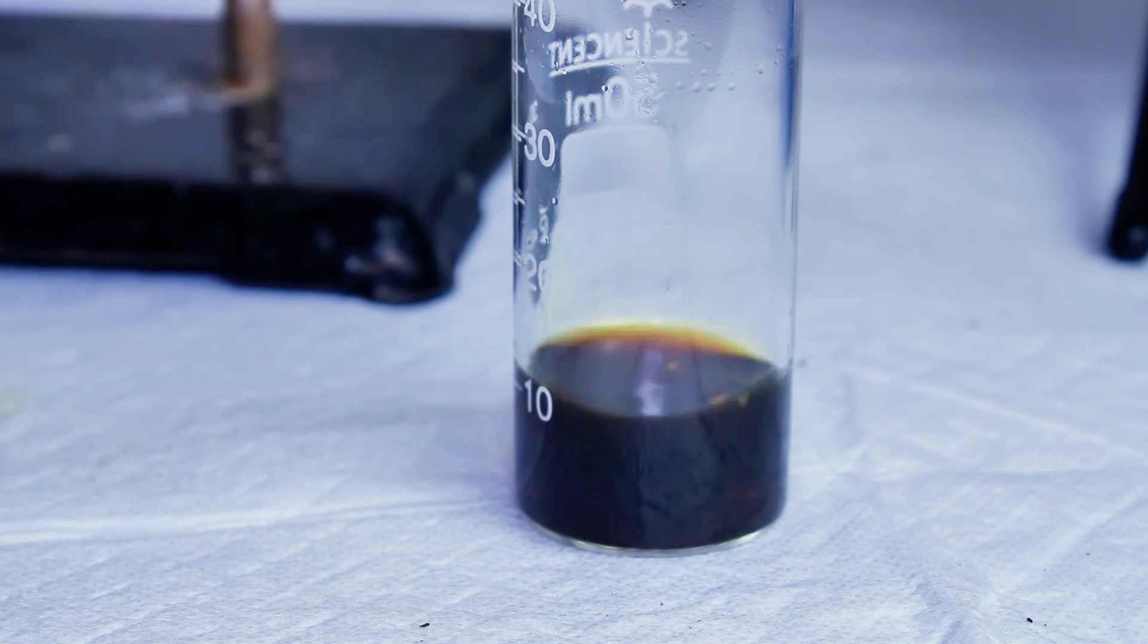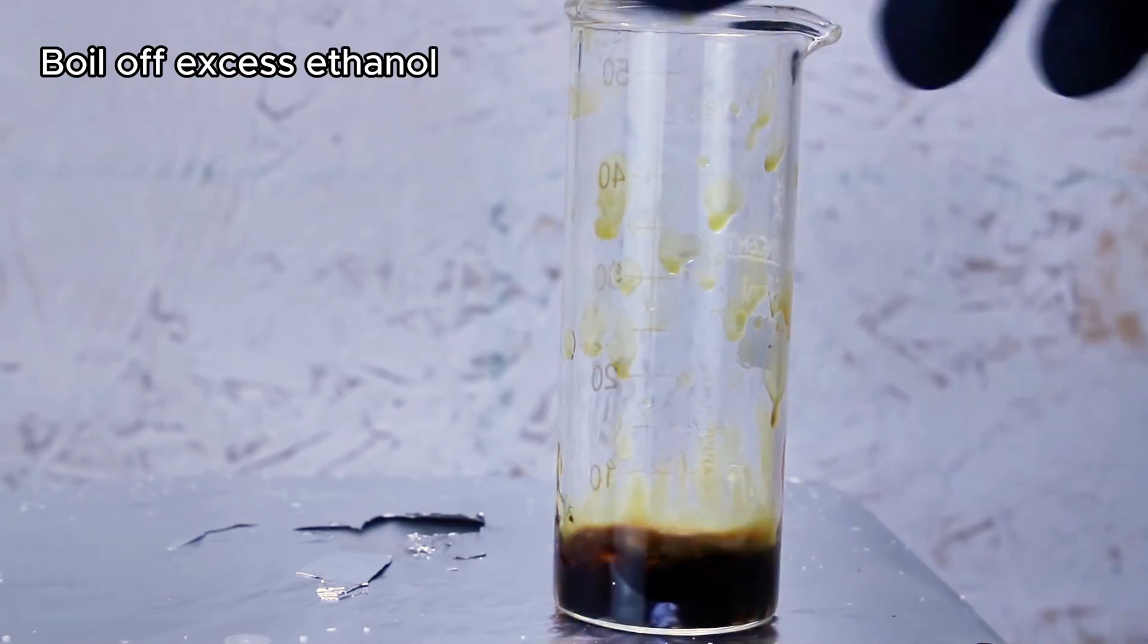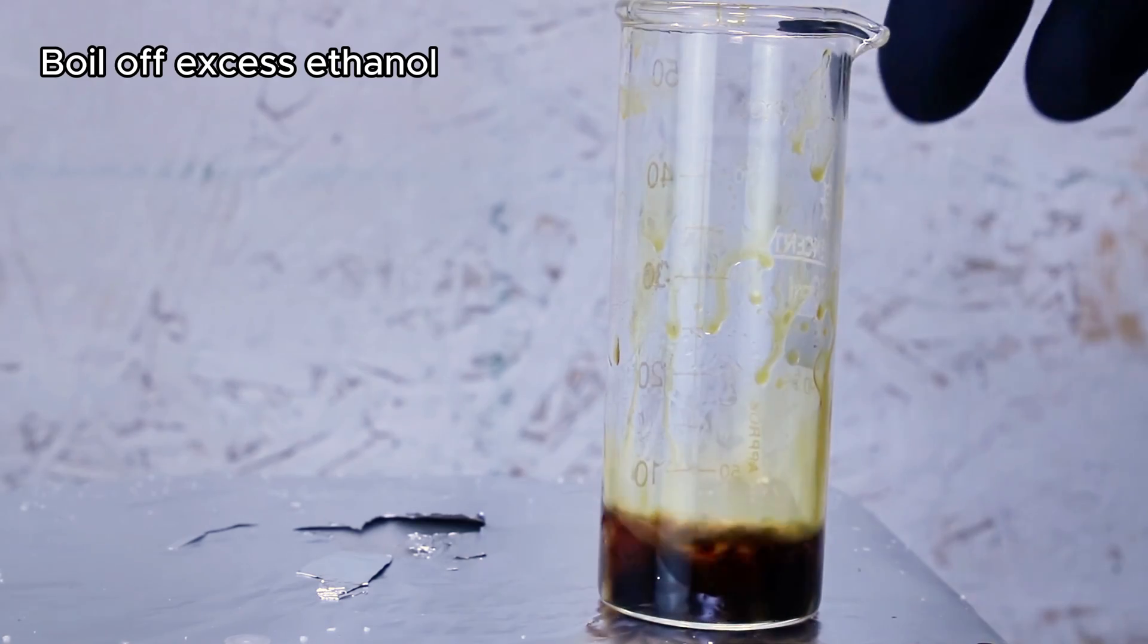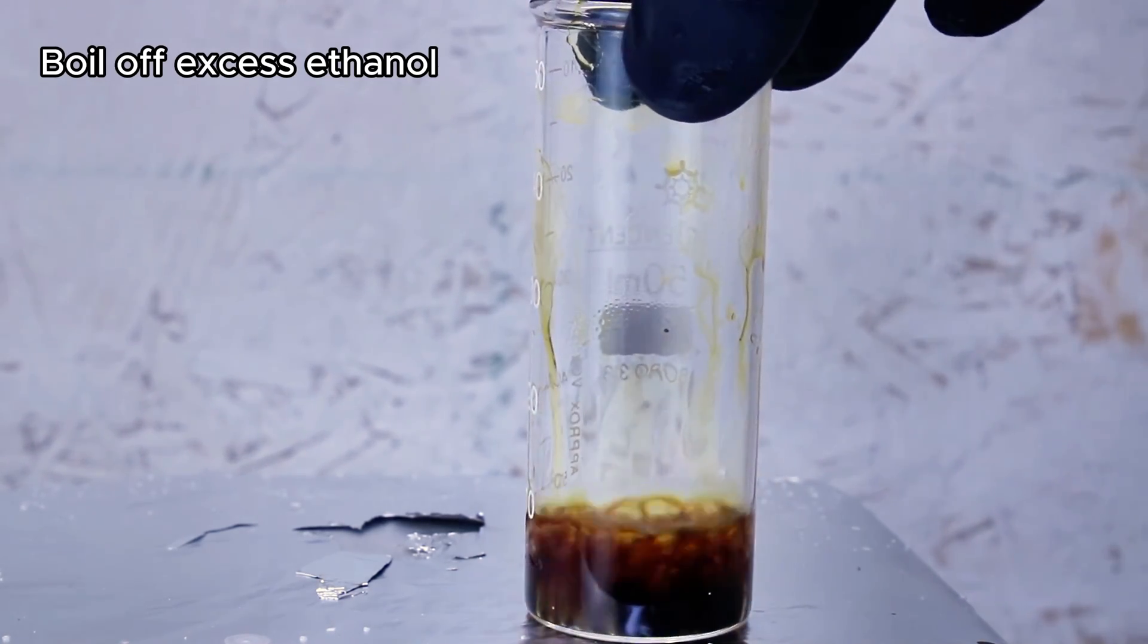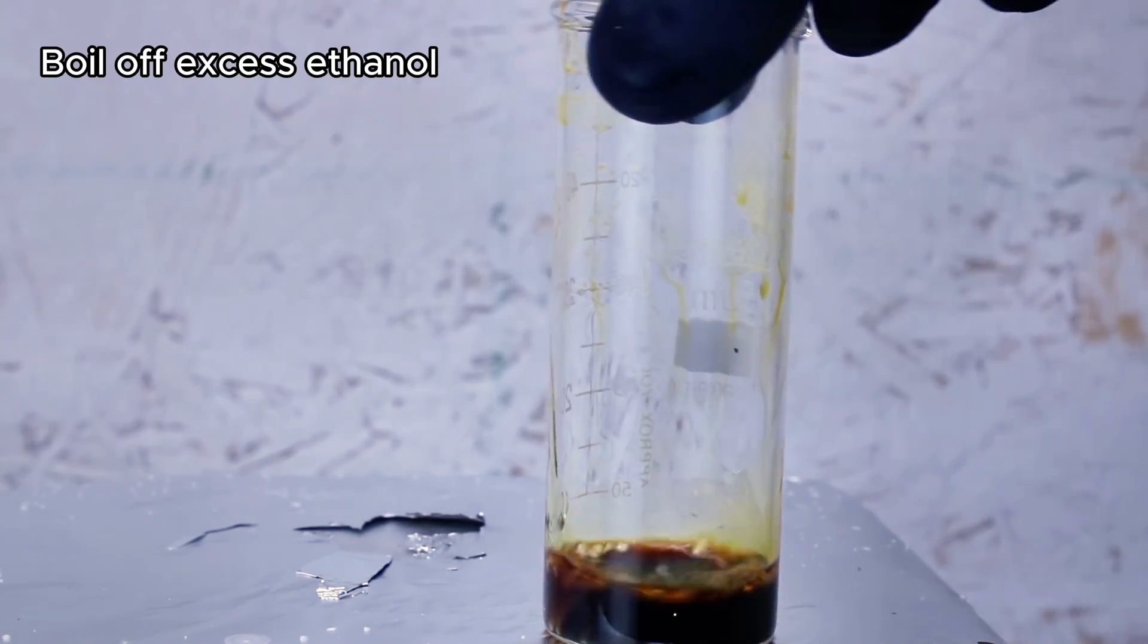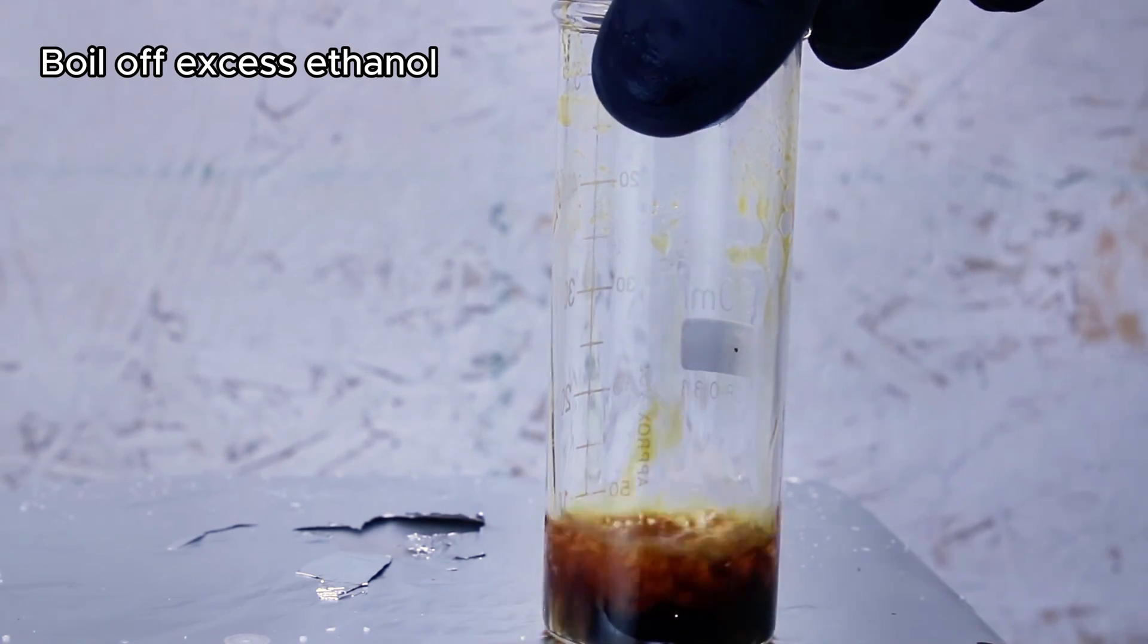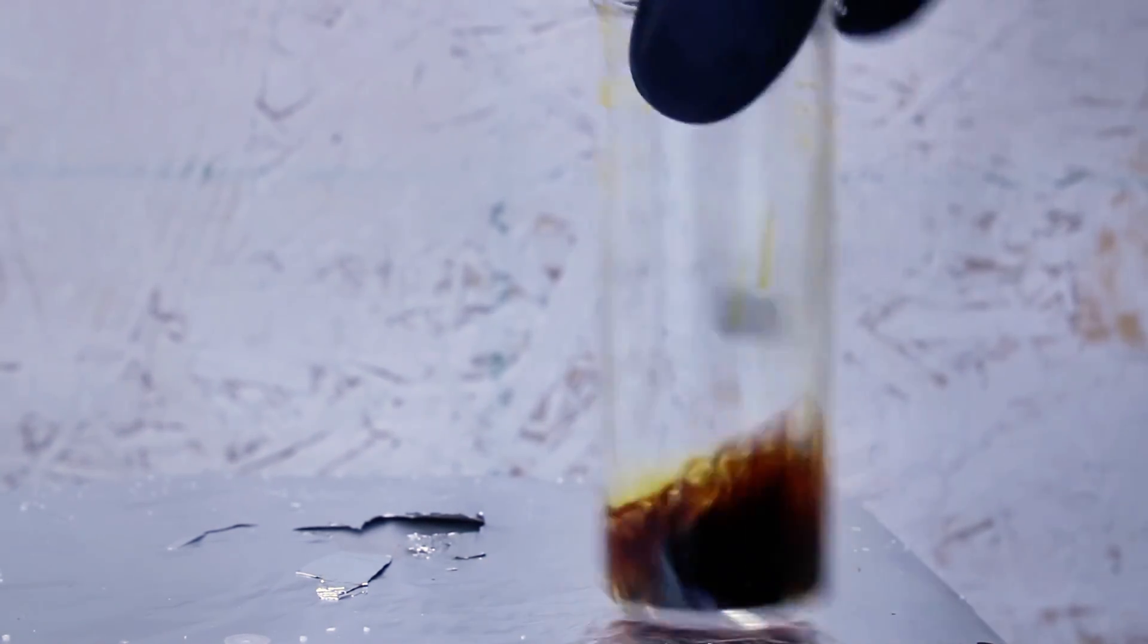After the filtration is complete, I heat this on a hot plate at low heat to drive off as much ethanol as possible and leave my cadaverine behind. Cadaverine is a liquid, and the best way to tell that all of the ethanol has evaporated away is when this starts to give off visible white fumes instead of clear ethanol fumes. And that's pretty much it.